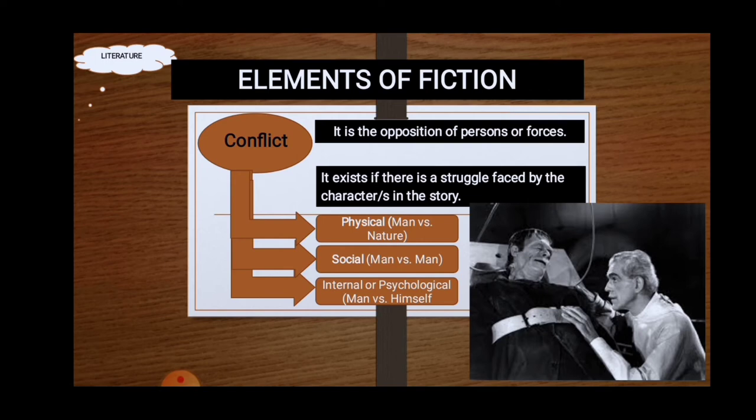Let's start with man versus nature. In this type of conflict, a character is tormented by natural forces such as storms or animals. Again, talking about man versus nature, the protagonist or the character's opponent here is natural forces. It can be storms, floods, or whatsoever.